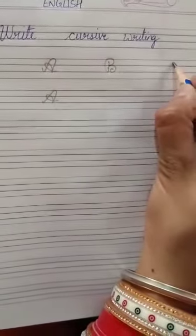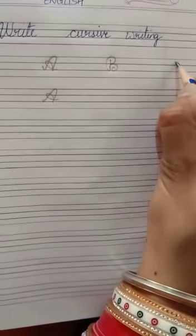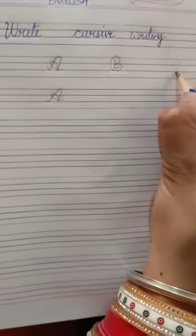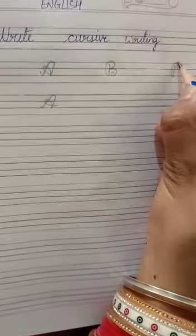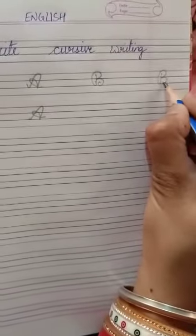So once more from between our first two lines I am going to come downwards then going to come upwards and going to form this B.